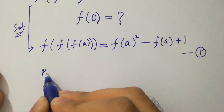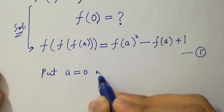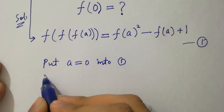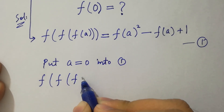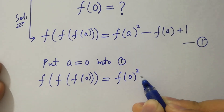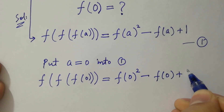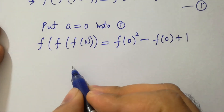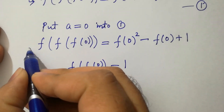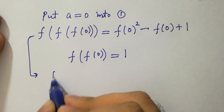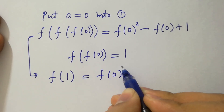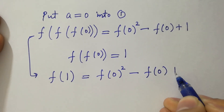Put a equal to 0 into the first equation. We have f of f of f of 0 equal to f of 0 squared minus f of 0 plus 1. Since f of f of 0 equals 1, then f of f of 0 is 1, giving us 1 equals f of 0 squared minus f of 0 plus 1.